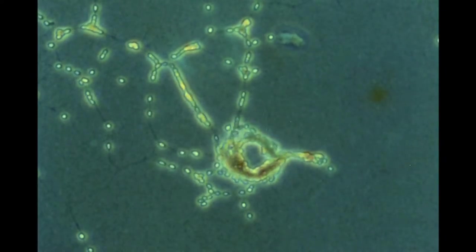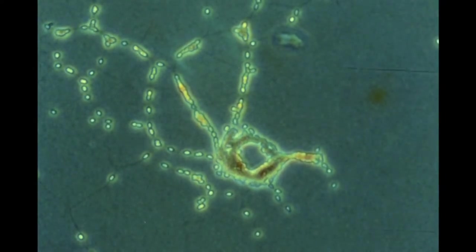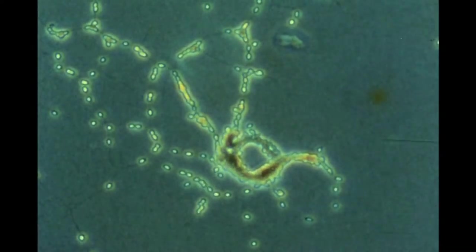Many cells will aggregate in the older parts of the colony, but these aggregations lead only to poorly defined resting structures.